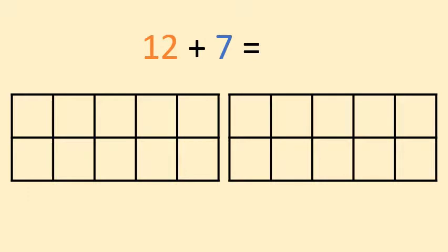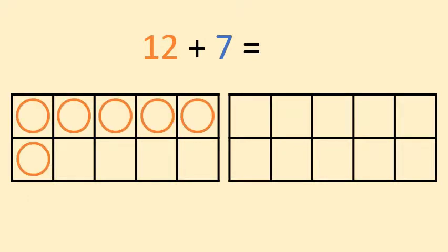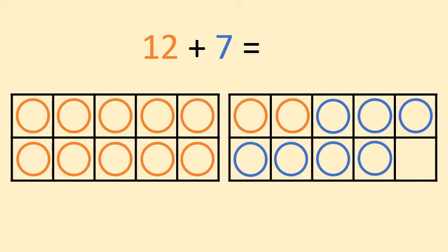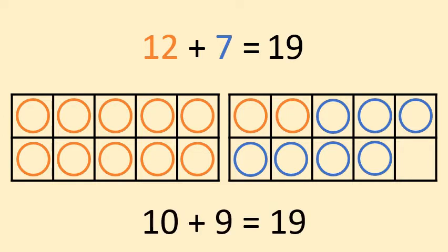Finally, let's try 12 and 7. We already fill up one box with 12 and have 2 left over. Let's add the 7. We end up with 10 and 9, which makes 19. 10 plus 9 is the same as 12 plus 7.